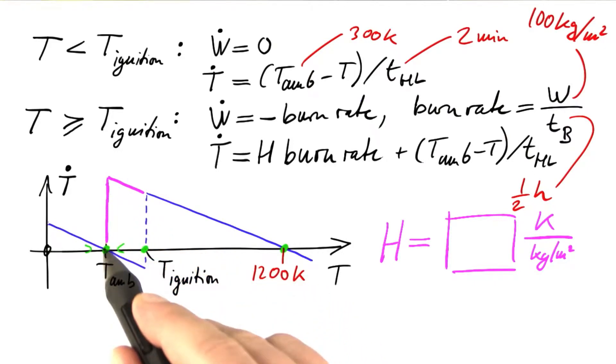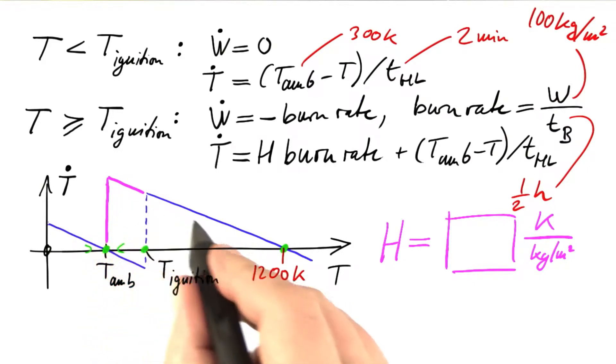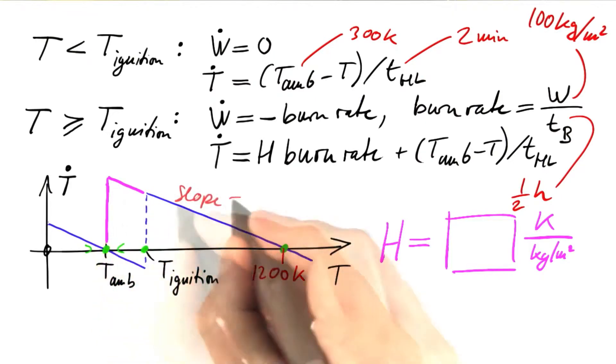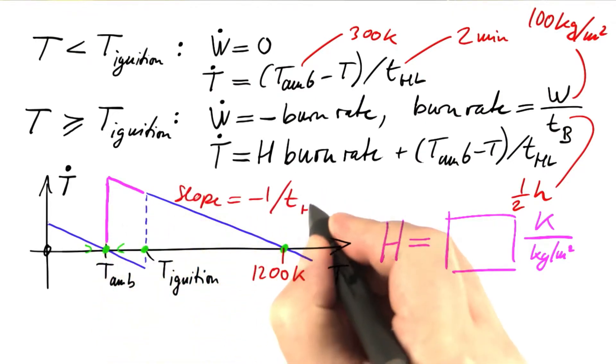The trick is to add these two lines to the diagram. We know the slope of this line, which is minus 1 over the time constant for the heat loss.